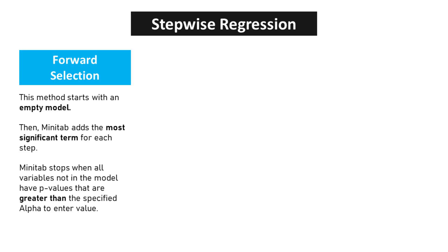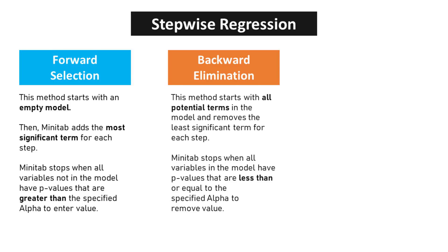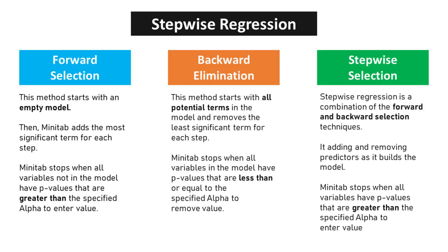For forward selection in Stepwise Regression, this method starts with an empty model, then Minitab adds the most significant term at each step. Minitab stops when all variables not in the model have p-values greater than the specified alpha-to-enter value. For backward elimination, this method starts with all potential terms and removes the least significant term at each step. Minitab stops when all variables in the model have p-values less than or equal to the specified alpha-to-remove value. Stepwise regression is a combination of forward and backward selection techniques, adding and removing predictors as it builds the model.